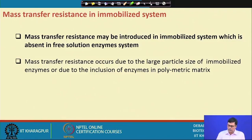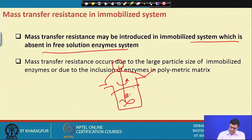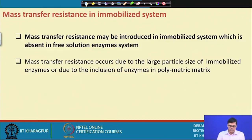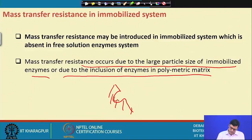Mass transfer resistance may be introduced by the immobilized system, which is absent in a free enzyme solution. When enzymes and substrate are soluble, they can freely interact — there is no diffusion problem. But once the enzyme is insoluble, the substrate must diffuse from the liquid to the surface of the solid matrix. Mass transfer resistance occurs due to the large particle size of the immobilized enzyme and due to inclusion of enzymes in a polymeric matrix.